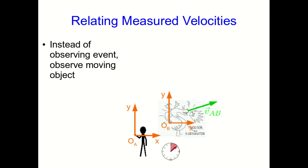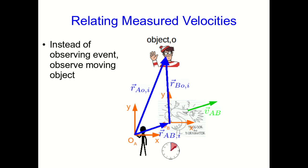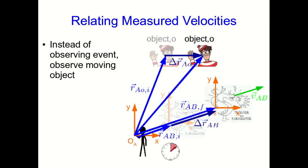Let's move on from how positions transform to look at how velocities transform, which will allow us to reproduce what we had in the previous lectures. And so we need to track something that's moving. So instead of you and Trogdor observing an event, you're now observing some moving object and you want to keep track of where that object is. So of course you each measure its position, and we already know how the position you measure and the position that Trogdor measures at this initial time are related. And now at some later time relative to you, the object and Trogdor have both moved.